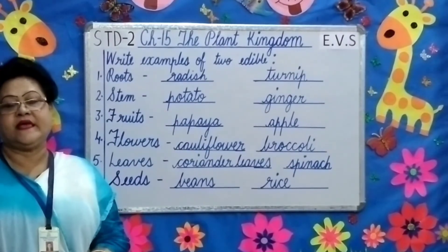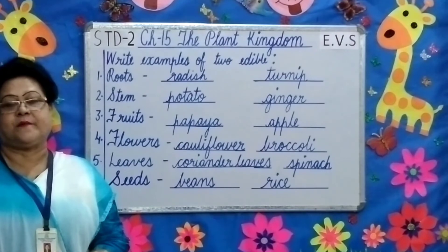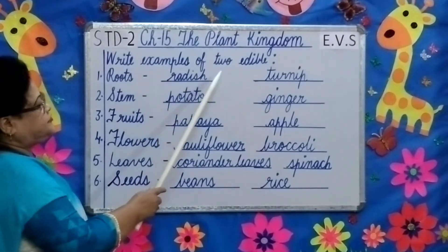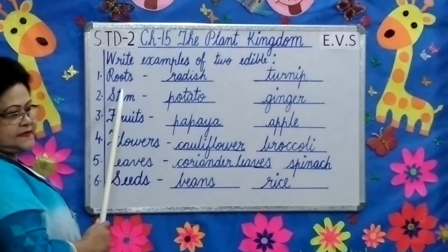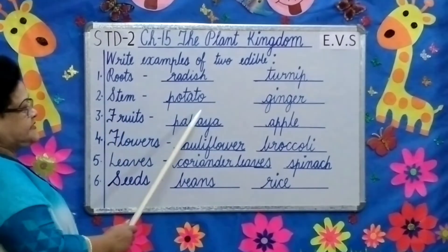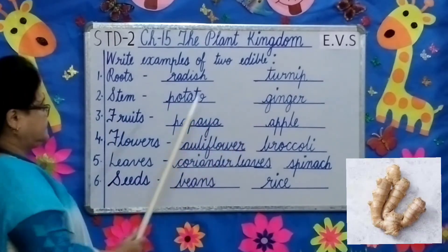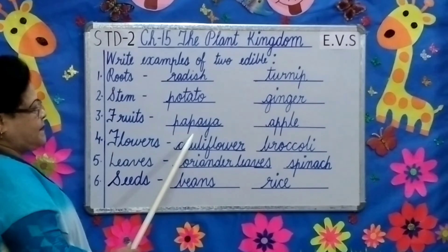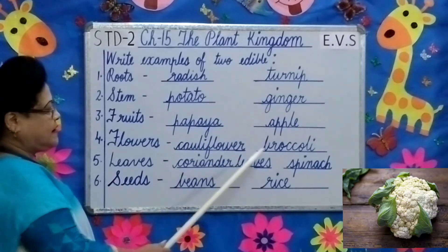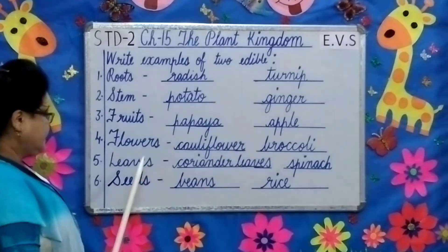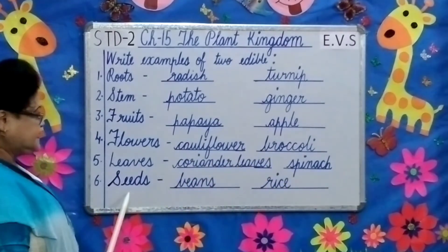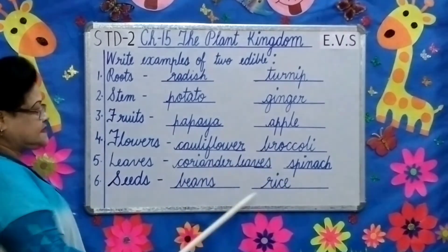We eat these parts of the plant as food. Examples of edible plant parts: Roots — radish, turnip. Stem — potato, ginger. Fruits — papaya, apple. Flowers — cauliflower, broccoli. Leaves — coriander leaves, spinach. Seeds — beans, rice.